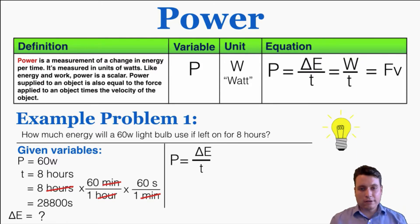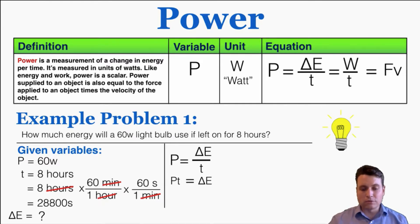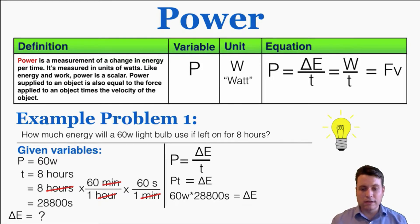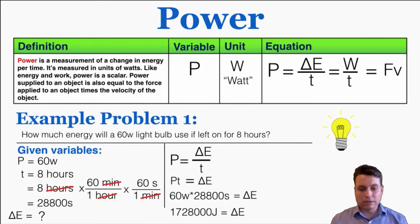We're trying to find the change in energy of the light bulb. If power is change in energy divided by time, that also means that power times time equals the change in energy, which is what we're trying to find. So plugging that in: 60 watts, which means 60 joules per second, times 28,800 seconds equals the change in energy. Our final answer is 1,728,000 joules of electrical energy — quite a bit of energy used in just one day by a 60 watt light bulb.